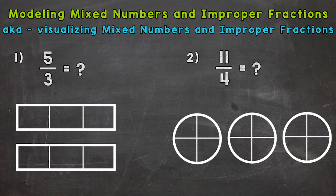Let's jump right into number one, where we have five-thirds. That's an improper fraction — our numerator or top number is greater than our denominator or bottom number. So that improper fraction has a value greater than one whole. Any improper fraction does. So let's model five-thirds.